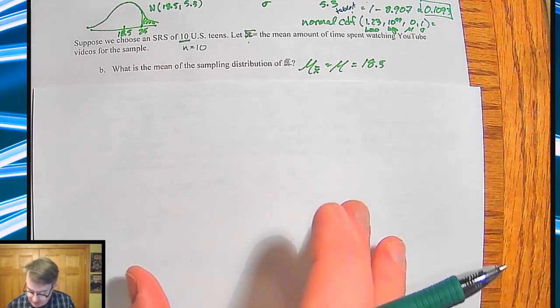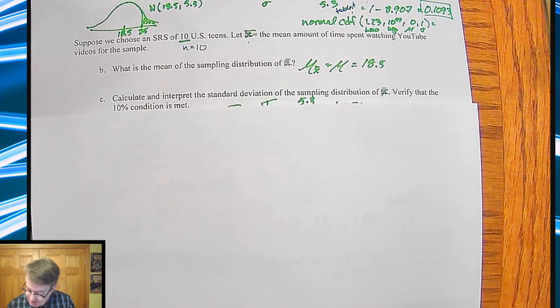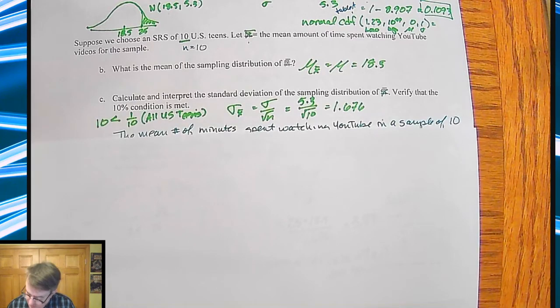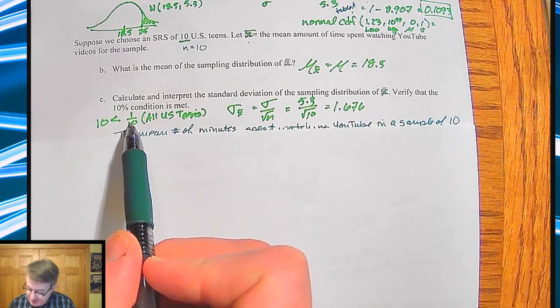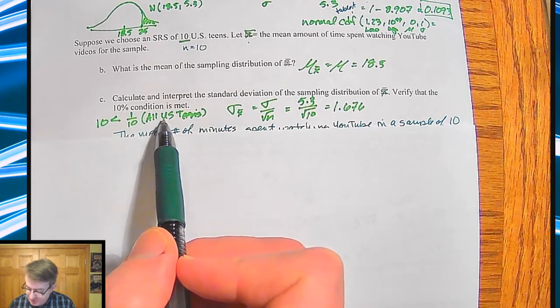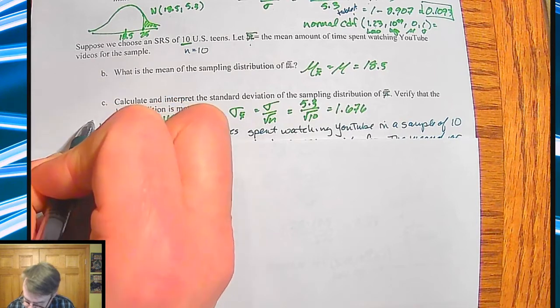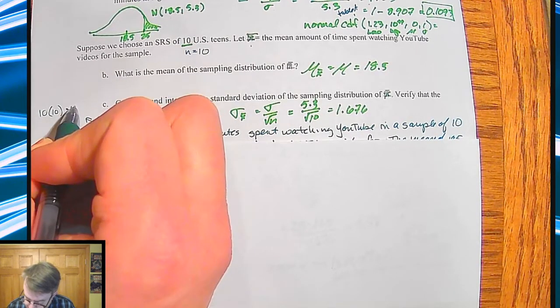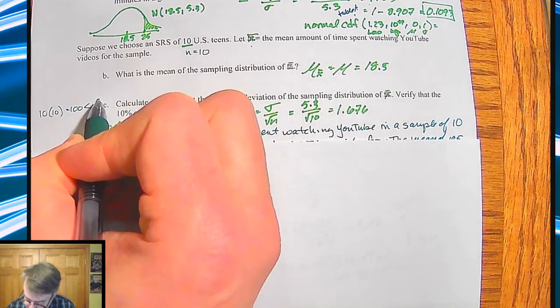Now, in terms of calculating and interpreting the standard deviation, we have to, first of all, make sure the 10% condition is being met. The 10% condition, remember, says that you're not taking any more than 10% of the population. So that means that we don't have to replace them. And one way you can write it is this: 10 is less than or equal to 1 over 10 of all U.S. teens. That means I have also seen somebody do it like this: 10 times 10 is equal to 100, and that is less than all U.S. teens.